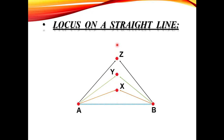जितने भी Points मैं ऊपर Consider करता जाऊं — C, D, कुछ भी — अगर वो इन दोनों Fixed Points से Equal Distance पर होंगे, तो वो Circle नहीं बनाएंगे। क्योंकि यहाँ दो Fixed Points का ज़िक्र है — A और B — तो इनसे Equal Distance पर Points लेने पर हमेशा एक Straight Line बनेगी, जिसका नाम होता है Perpendicular Bisector।